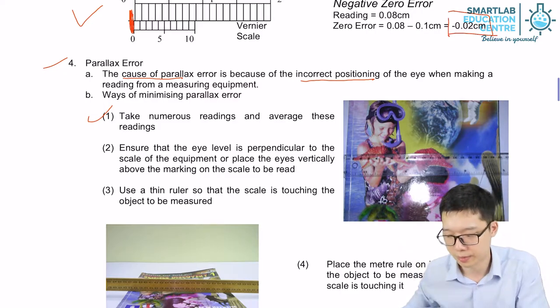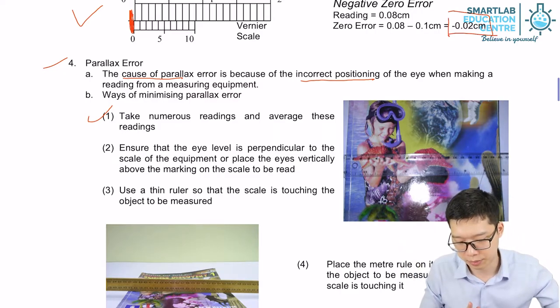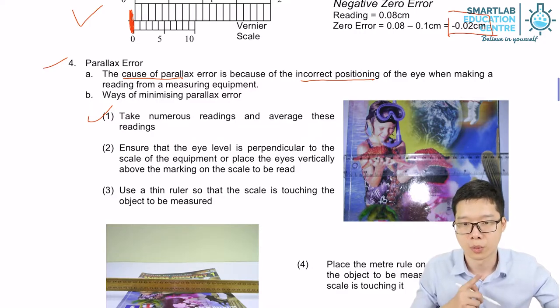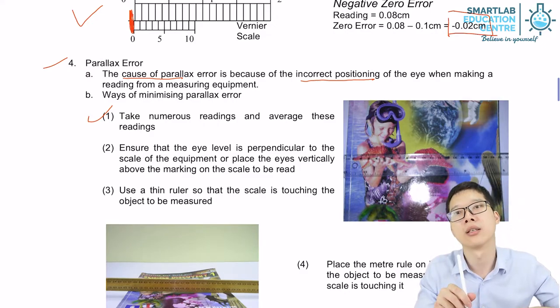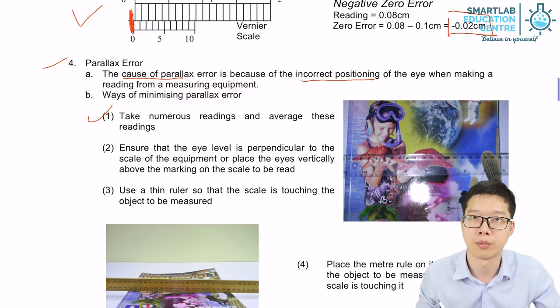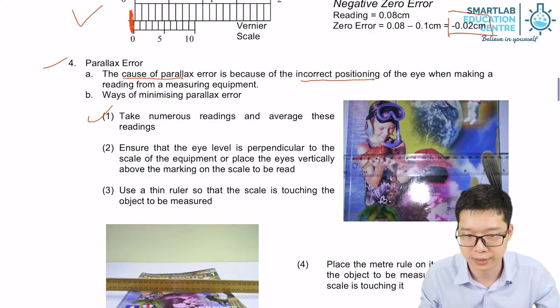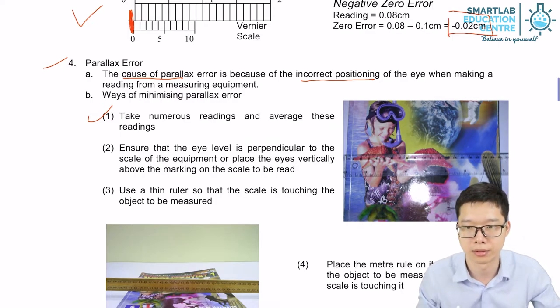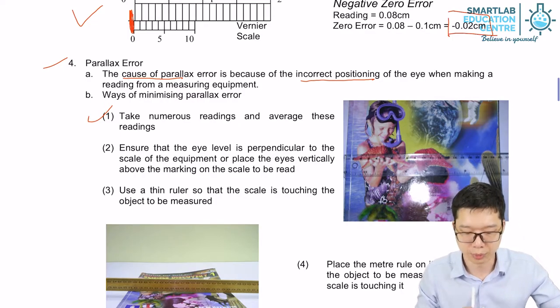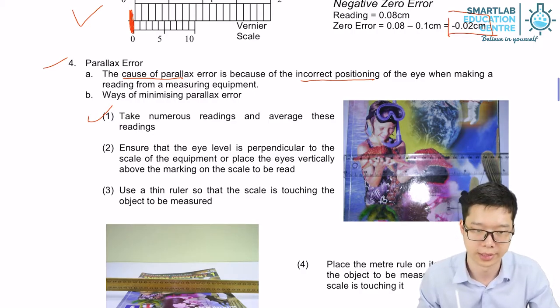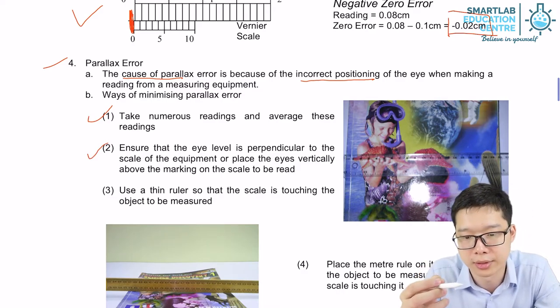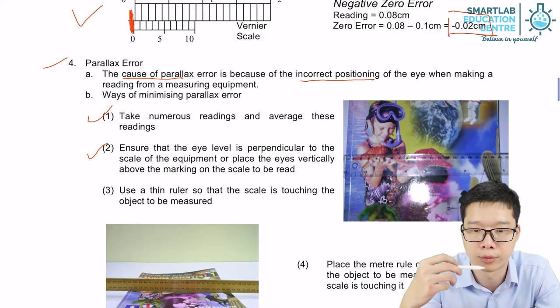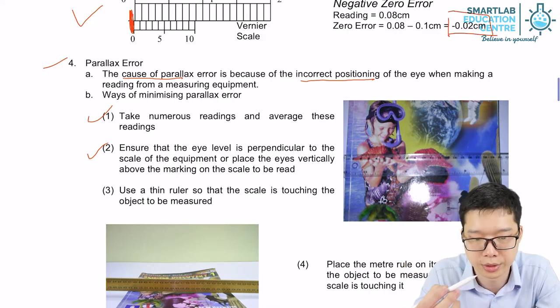Number one, take numerous readings and then take the average of all the readings. Because if you try to align your eyes perpendicular up above the readings, one time we may be slightly slanting to the left, second time we might be slightly slanting to the right. If you take more readings, we can minimize the errors by averaging them. Second one is to ensure your eye level is perpendicular to the scale, perpendicular to the reading, which is what we try to do just now.